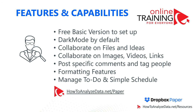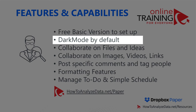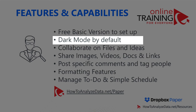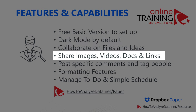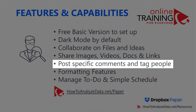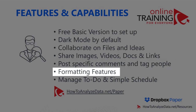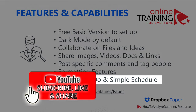What are the cool features and capabilities of Dropbox Paper? The main reason to use it is that the free basic version is packed with features. It uses dark mode by default, which reduces strain on your eyes. You can collaborate on files and ideas, share images, videos, docs, and links in a single workspace. You can post specific comments and tag people. It provides rich text formatting, tables, to-do lists, and simple scheduling.